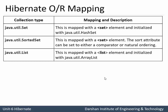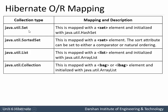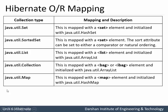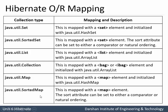Next, java.util.List is mapped with the list element and initialized with java.util.ArrayList. java.util.Collection is mapped with the bag or iBag element in Hibernate and initialized with java.util.ArrayList. Then java.util.Map is mapped with the map element in Hibernate and initialized with java.util.HashMap. Then SortedMap is mapped again with the map element, and the sort attribute can be set to either a comparator or in the form of natural ordering.